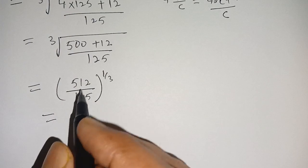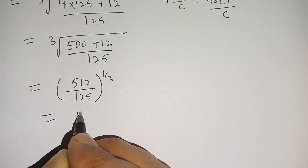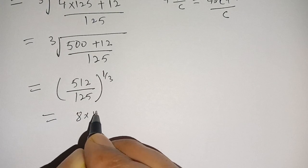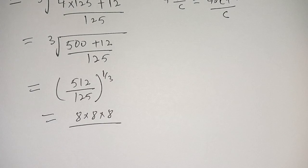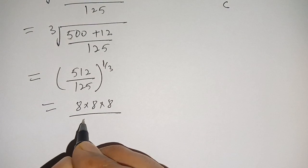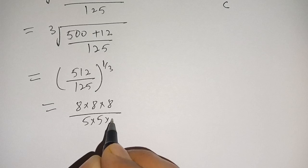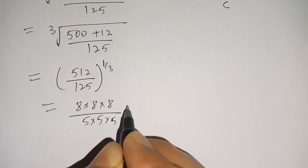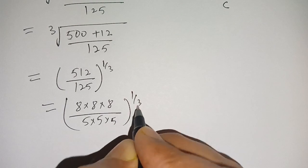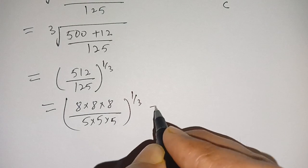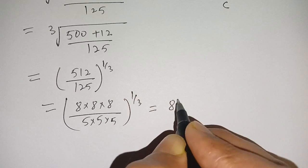Now 512 can be written as 8 times 8 times 8, and 125 can be written as 5 times 5 times 5. So we have (8 times 8 times 8) divided by (5 times 5 times 5), whole to the power of 1 divided by 3.